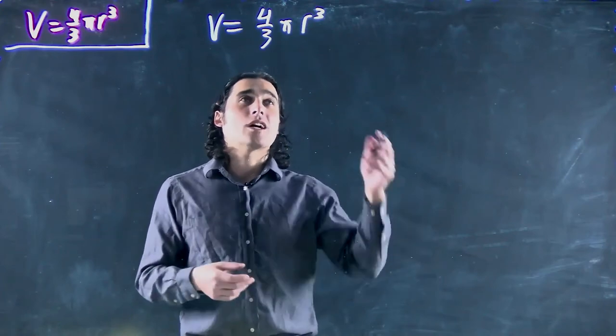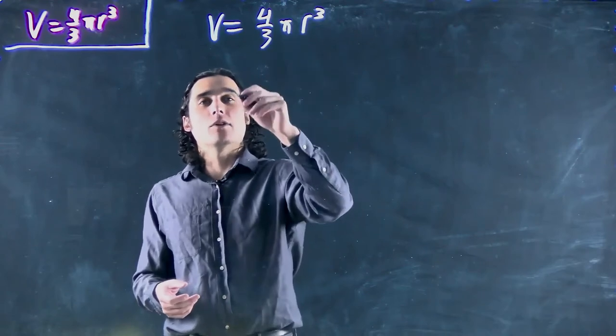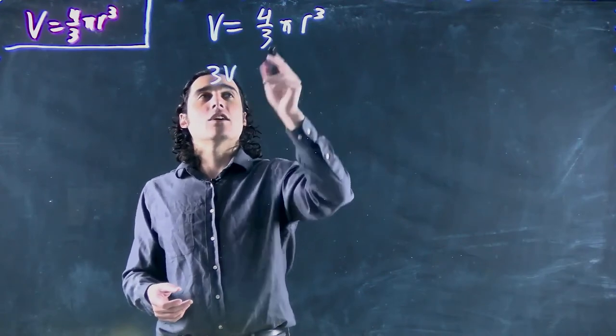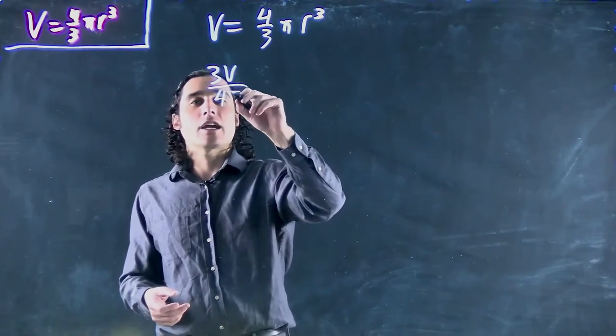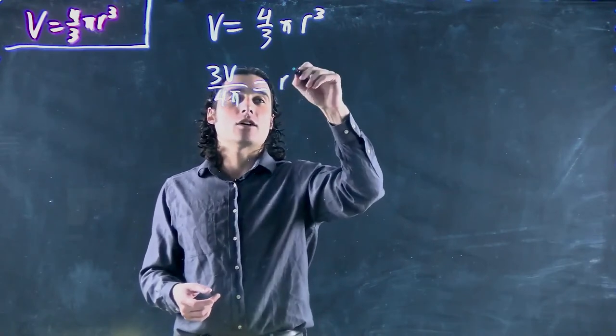First things first, we've got to get it all on its own. So we can multiply both sides by 3 to get 3V. We can also divide both sides by 4 pi because that will cancel all of the constants on one side and we'll just be left with r cubed.